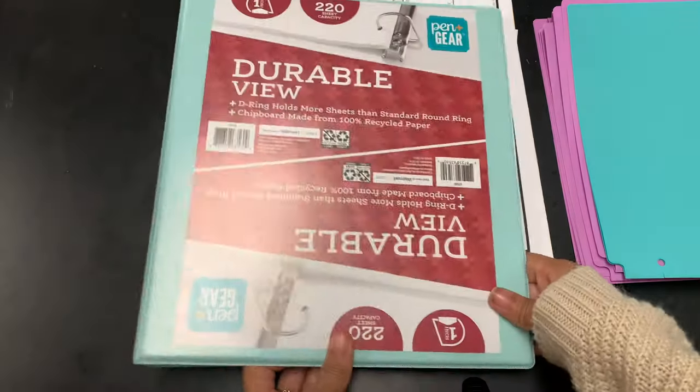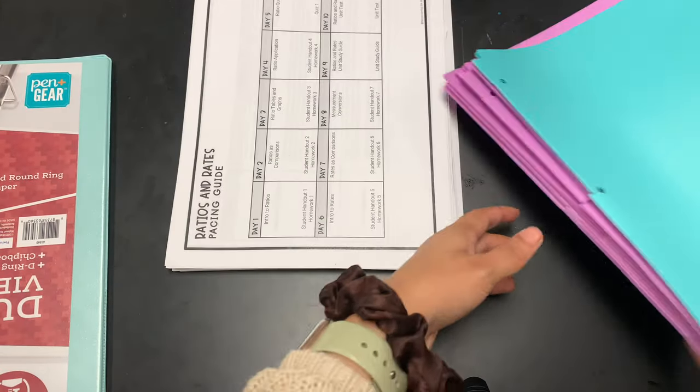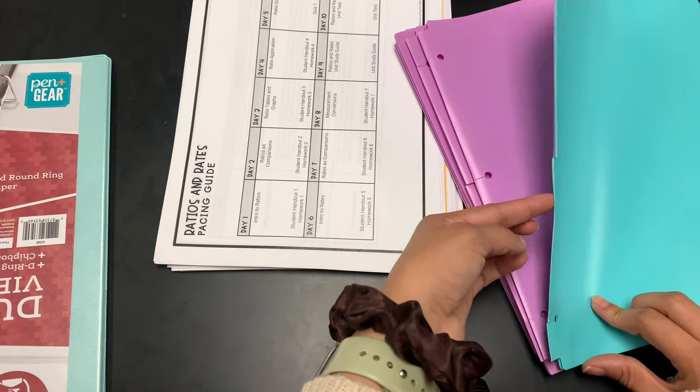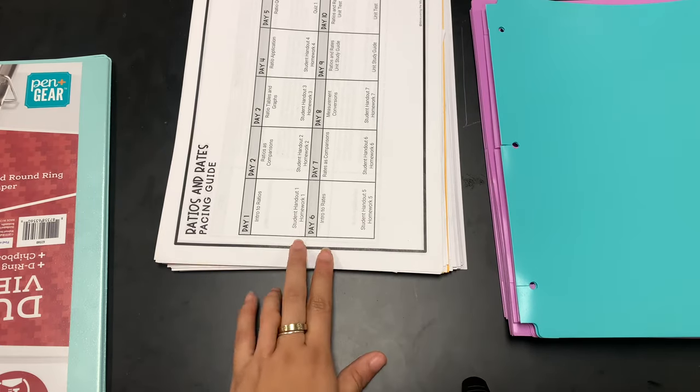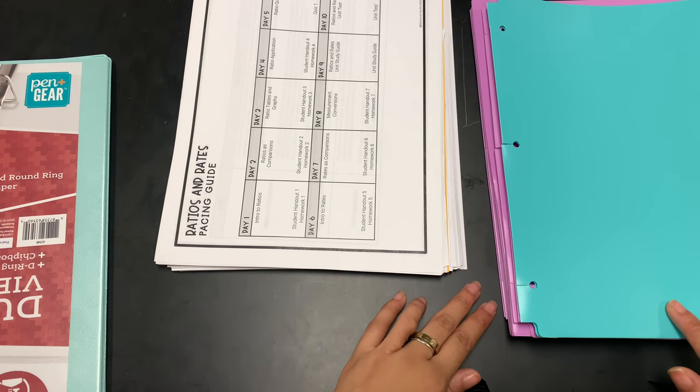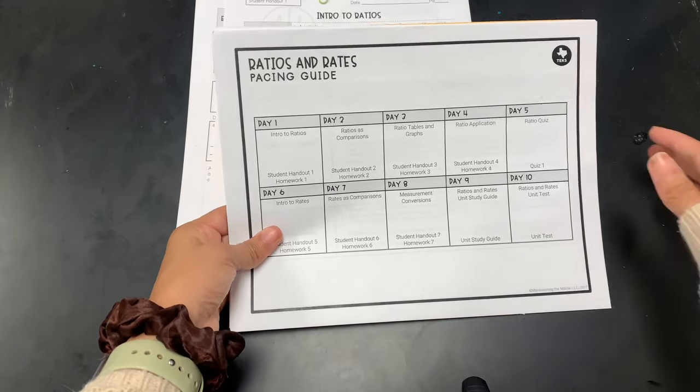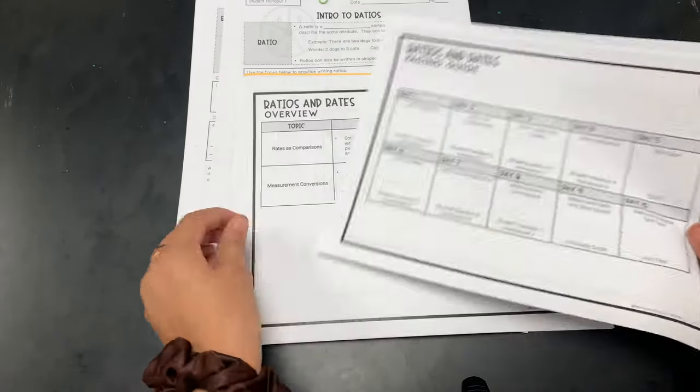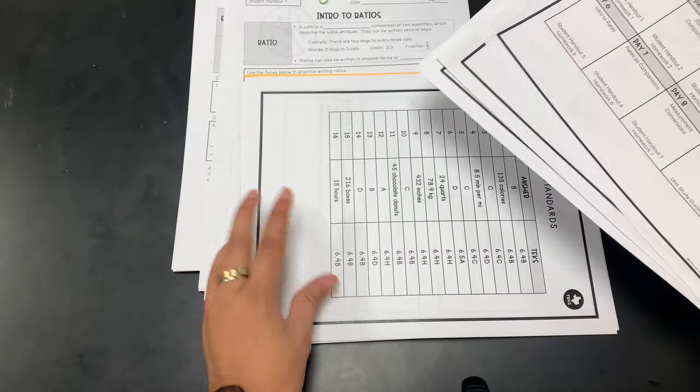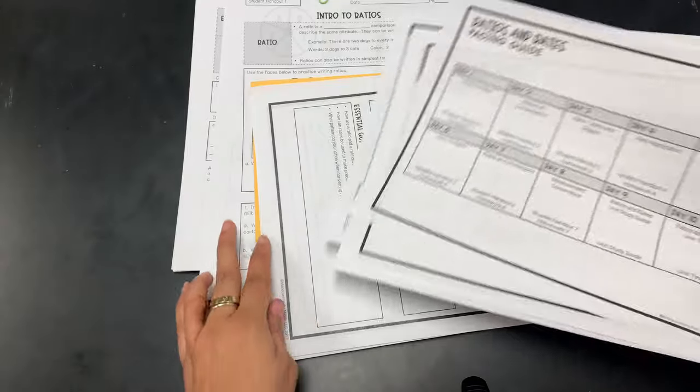So I'm going to use a binder, my plans, and then the type of folders that snap into the binder. You could also use pocket protectors or dividers, but I want to put them in folders that way I don't have to hole punch them. The first few papers are just the pacing guides, the overview, I think I have a couple answer keys in here, and then there's also the standards and objectives and things like that.